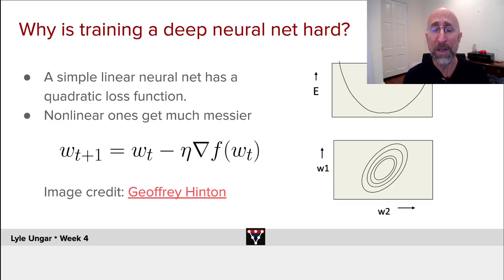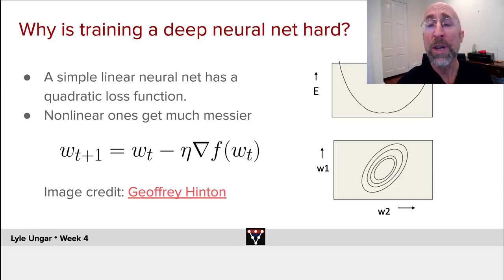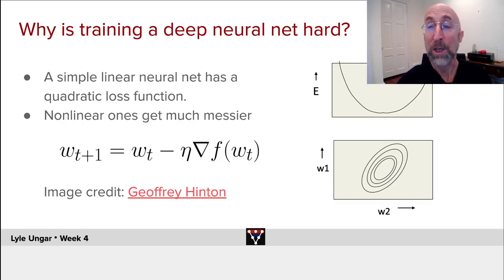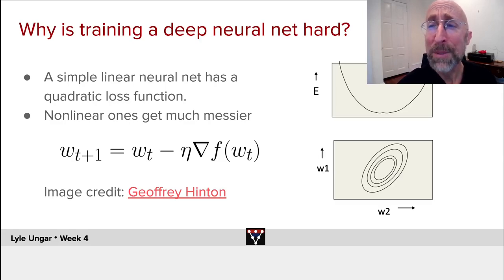The loss is evaluated over all training points, one training point, or a mini-batch of training points. We take the derivative of the loss function with respect to each of the weights — so if there are d weights, this is a d-dimensional derivative. We update the weights by subtracting off a learning rate times the slope.